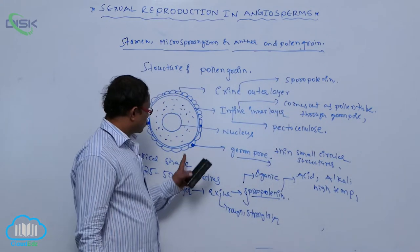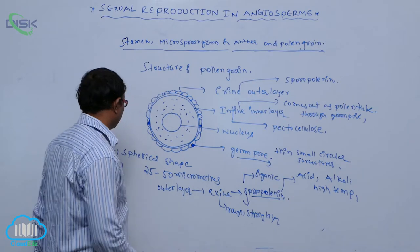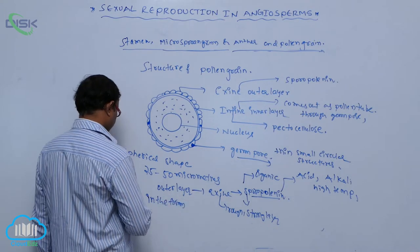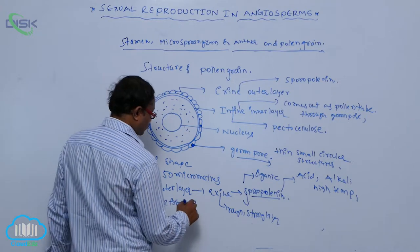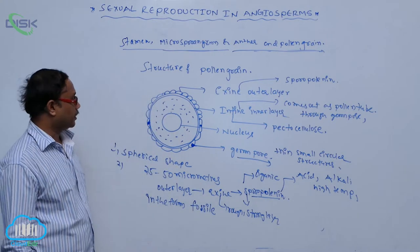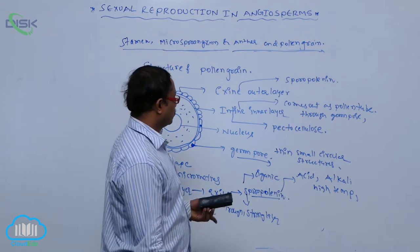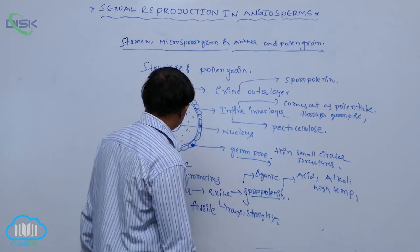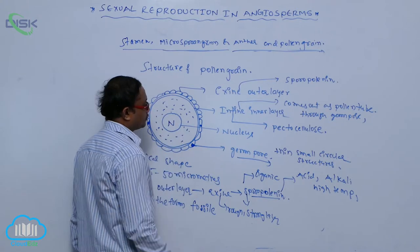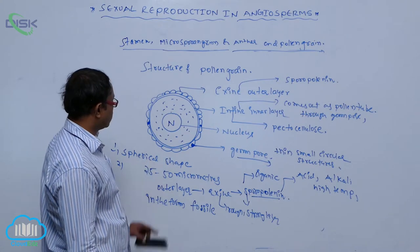Due to the presence of sporopollenin and the absence of any known enzyme to dissolve it, most pollen grains are available in the form of fossils. Pollen grains are most commonly available as fossils in plants because they do not get destroyed at high temperatures. Because it is made up of sporopollenin — a strong organic material — a perfectly intact nucleus is present inside, along with cytoplasm.